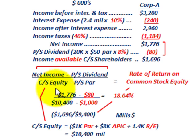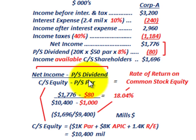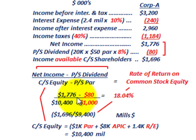Looking at our numbers: we go back to our net income of $1,776,000, which is after taxes and interest expense are taken out. Now we subtract out the preferred stock dividend of $80,000. So $80,000 is subtracted in our numerator.